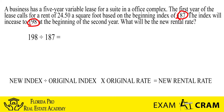So let's go ahead and look at this formula. 198, the new rate, divided by the old rate of 187 — that will give you a number that's gonna be the difference, and that's gonna be 1.0588.